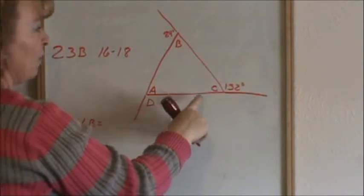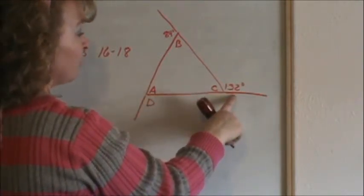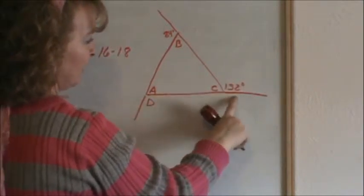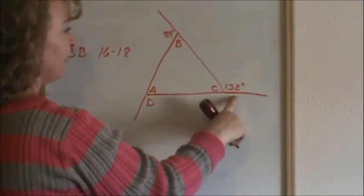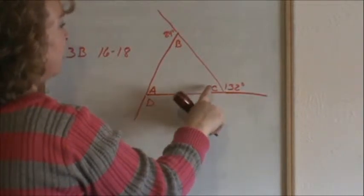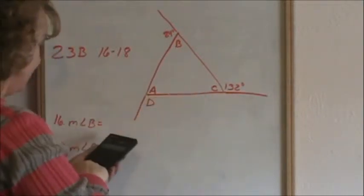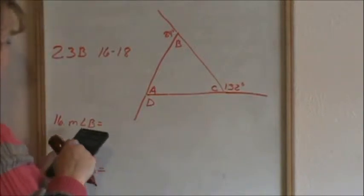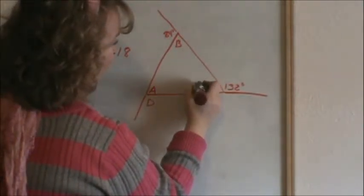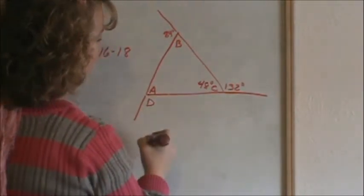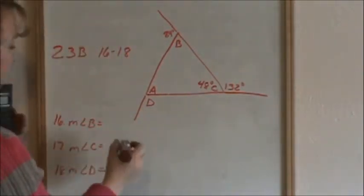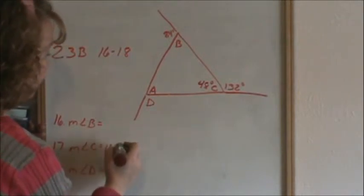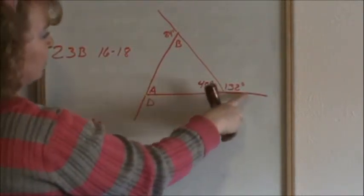What do we know about angle C and the 132 degree angle? This is a straight line, so therefore they are supplementary. So we can figure out what angle C is. Supplementary angles add up to 180 degrees. So therefore, angle C is 48 degrees.